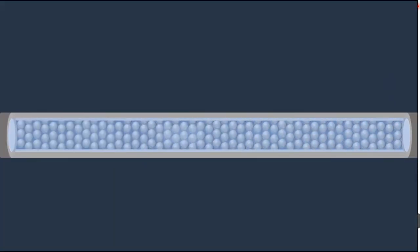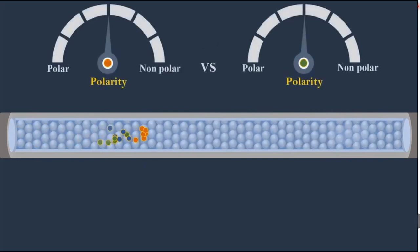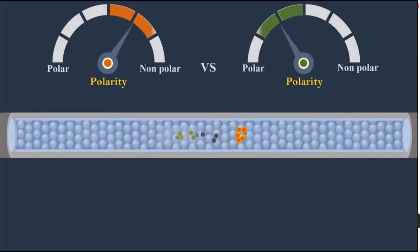In normal phase HPLC, the more polar the analyte, the more retained it is on the stationary phase. The more hydrophobic the analyte, the more it will prefer the mobile phase.